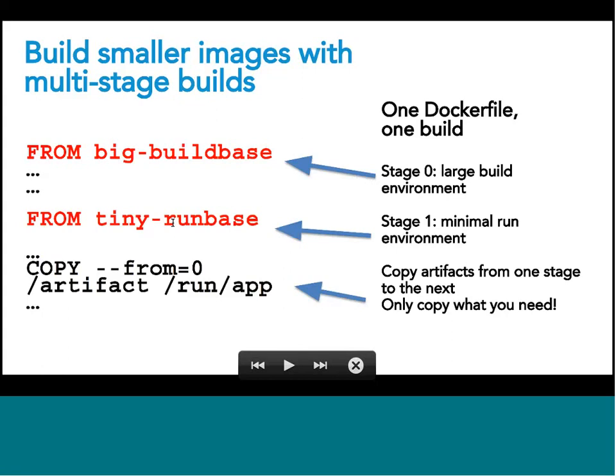You can have several FROM lines in your Dockerfile. Here we see an example where we have a big build base Docker image — say I'm a Java developer — I'll have the JDK, Maven, and maybe even Eclipse packaged in. I do my build from that, then I have a second FROM line for my run base — for Java, that might be FROM Java Alpine. The key line is COPY --from=0, where images are indexed from zero to n, copying the artifact into my tiny run base. You can have many layers each copying from previous ones.